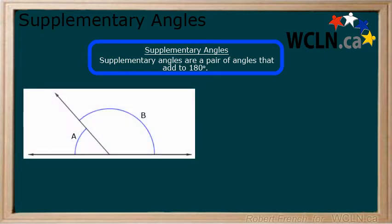Here, we have two angles on a line. Because angles on a line add to 180 degrees, we can call these two angles supplementary angles.